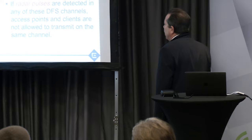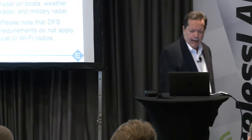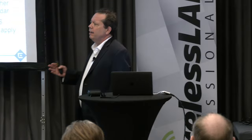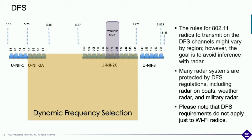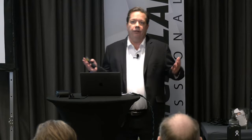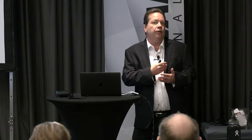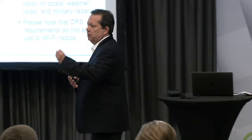The rules on how you can transmit on these DFS channels differ from country to country. There are fairly set rules in the United States and in Europe, and they differ somewhat across Asia as well, but they're pretty similar. Please note that DFS requirements aren't just for Wi-Fi — the 5 GHz band is an unlicensed frequency band, meaning anyone can transmit in it, but they still have to abide by rules. Other technologies transmitting in the 5 GHz band are also not allowed to interfere with radar.